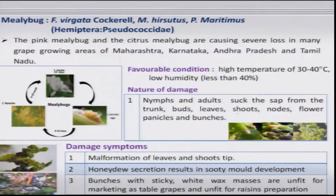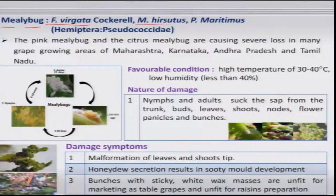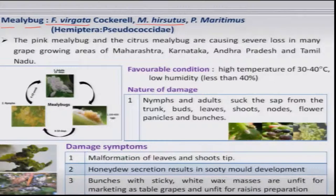Now for mealybugs, there are two important species which come on grapes: one is Pharisia virgata and another is Maconellicoccus hirsutus. These species are quite persistent; they are found throughout the year on almost all parts of the grape plant, and are quite severe in the major grape growing states.